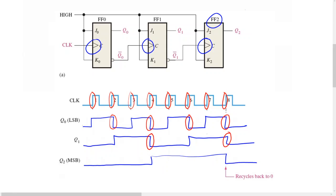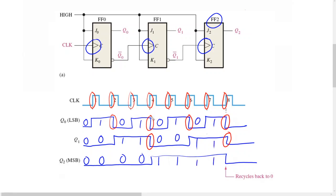We can verify this by writing down the logic values between different clock pulses: 0 0 0, 1 0 0, 0 1 0, 1 1 0, 0 0 1, 1 0 1, 0 1 1, and 1 1 1. You can see from those numbers that this gives you 8 states counting from 0 up to 7 — covering 5, 6, and 7 — and at the 8th clock pulse, the counter naturally recycles back to 0.